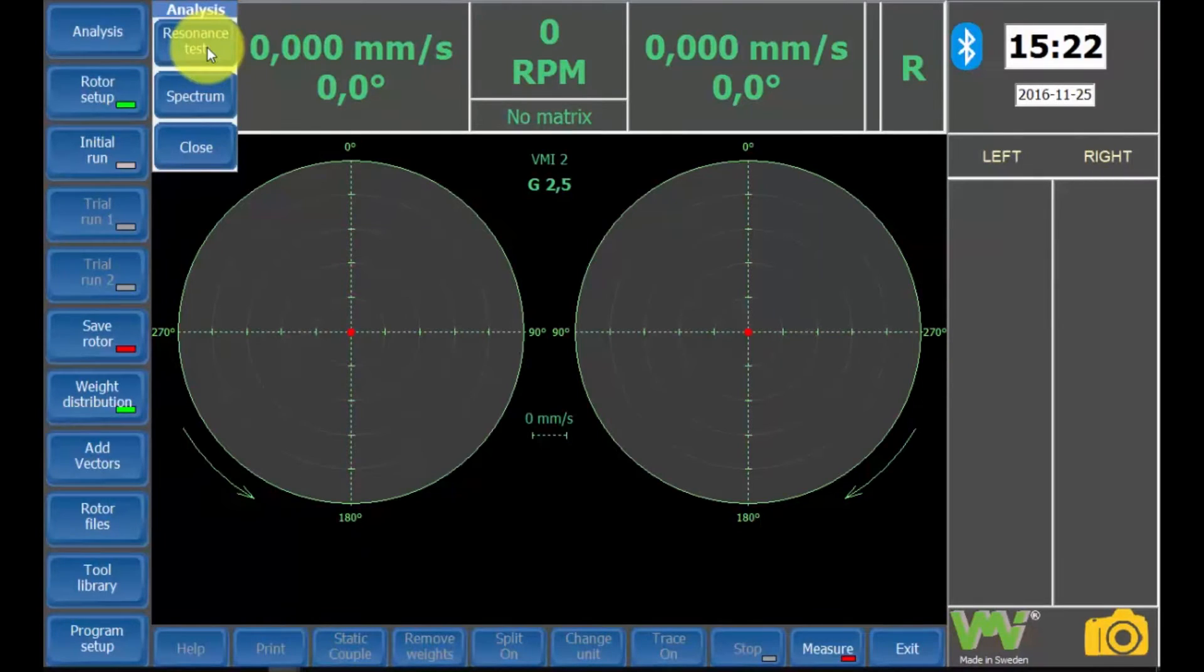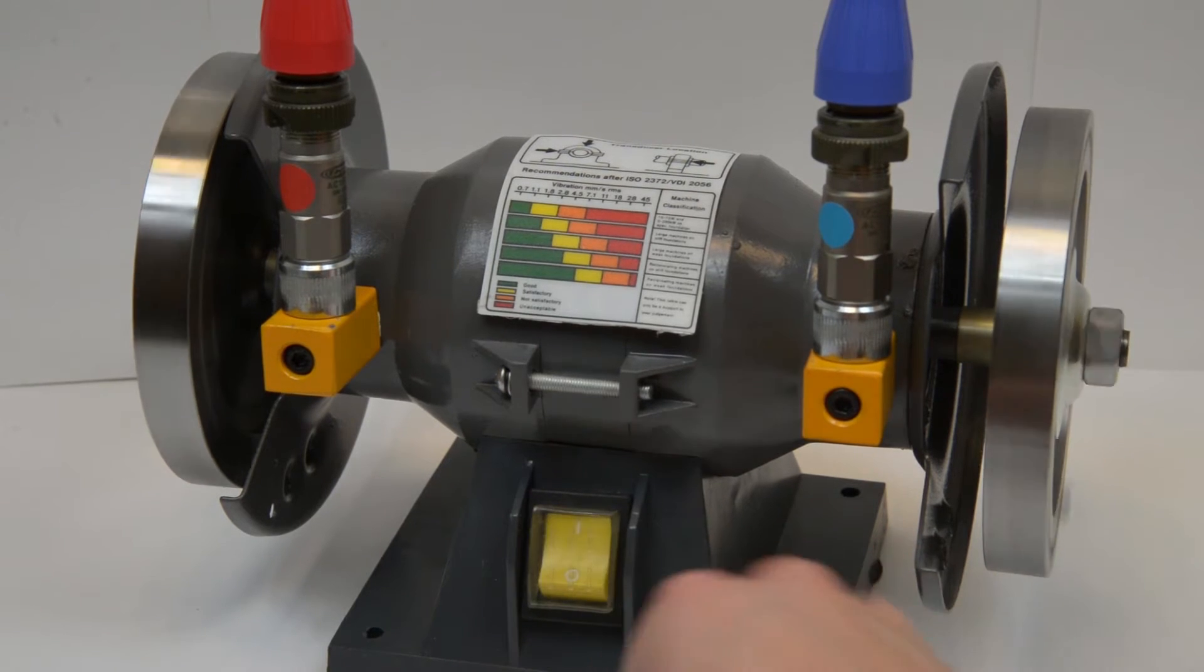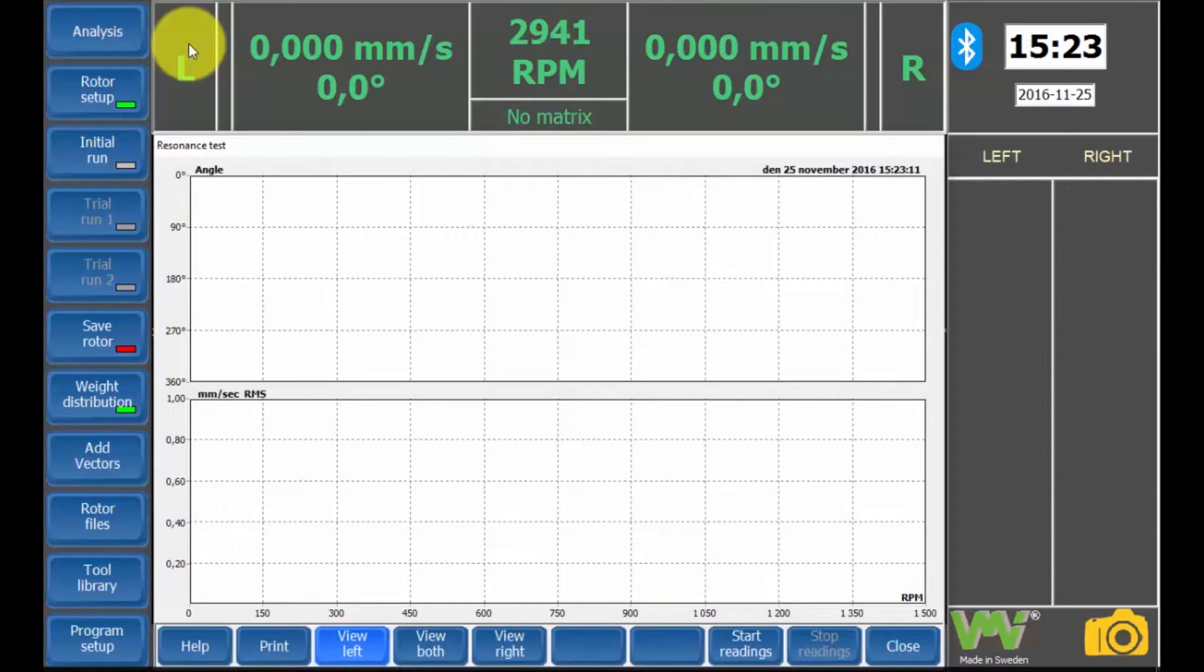To avoid balancing a router at a speed where it has its resonance frequency, we can use a resonance test. Start the machine and let it reach its maximum RPM. Now, start the reading. Wait for the sign, and then power off the motor.